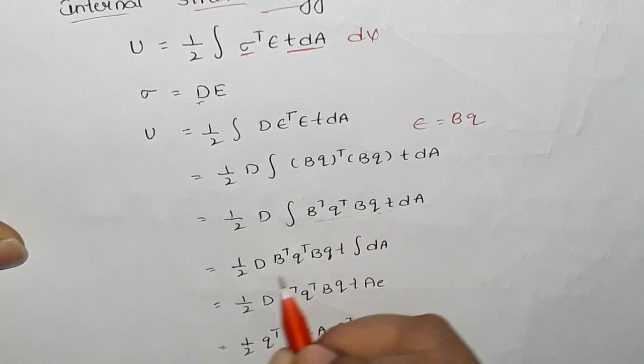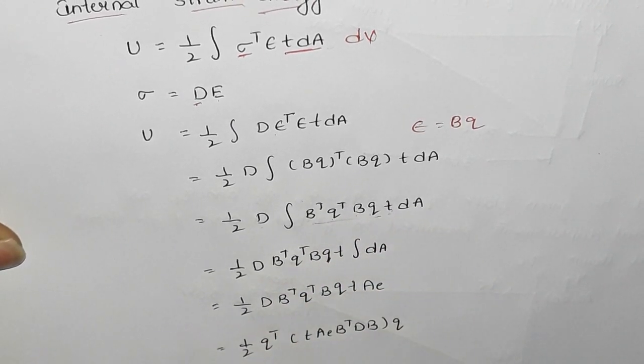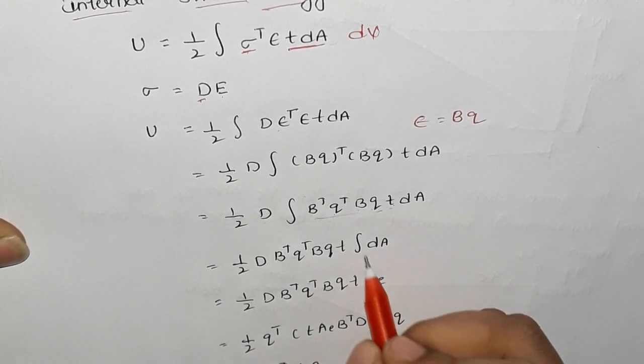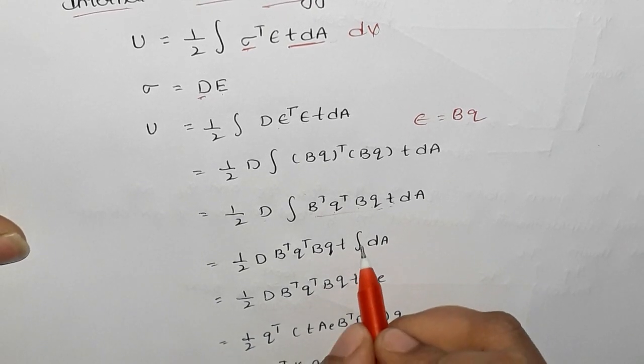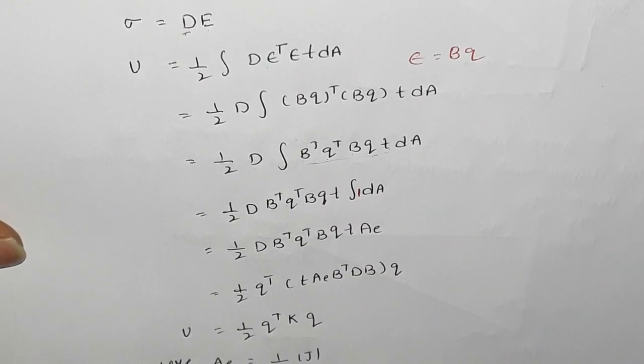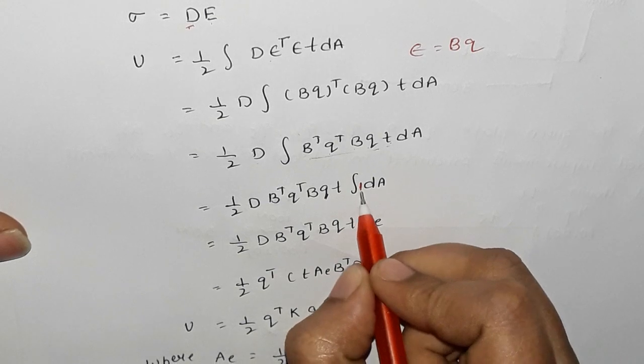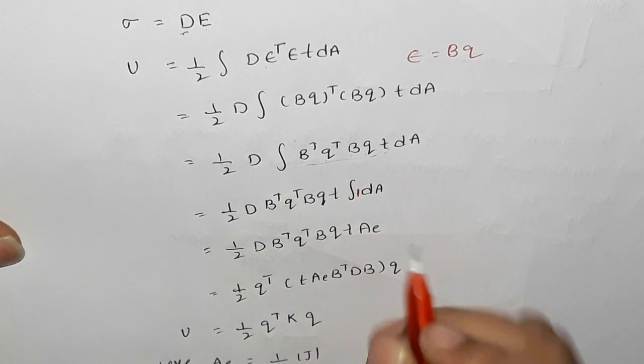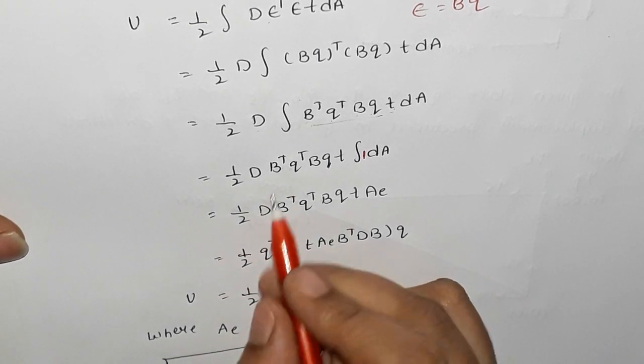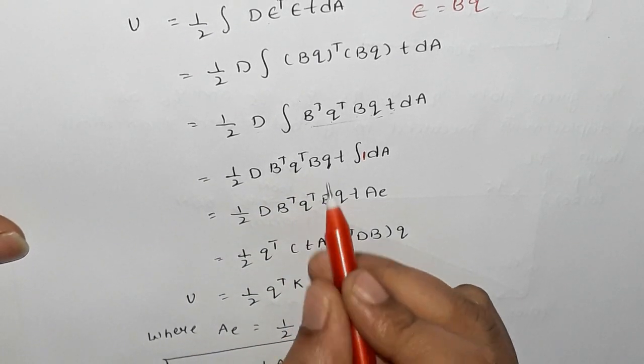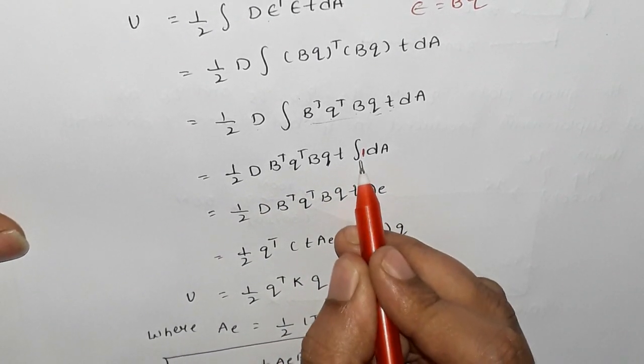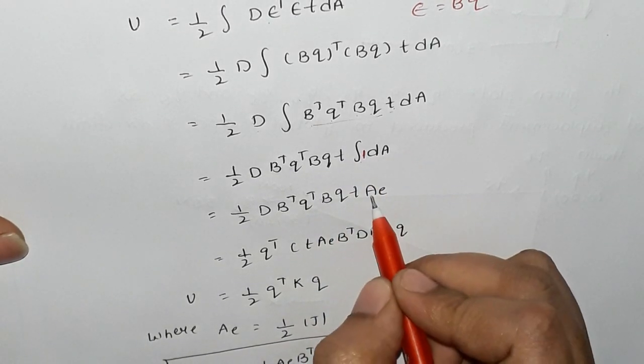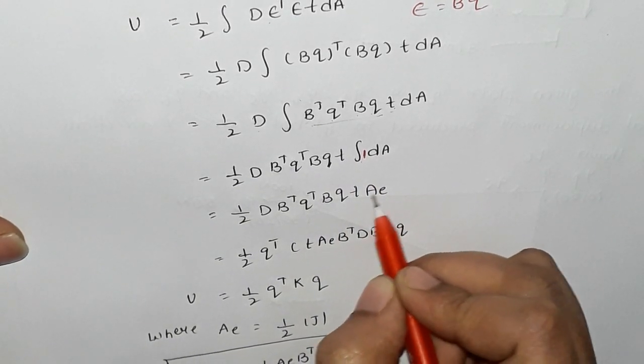This is constant because I am integral to the left side. So, integral dA T, integral 1 with respect to DA and then we have AE and then we have area of the element.